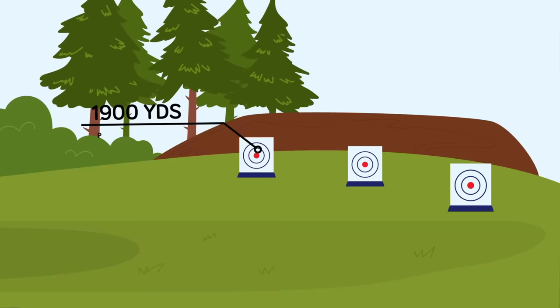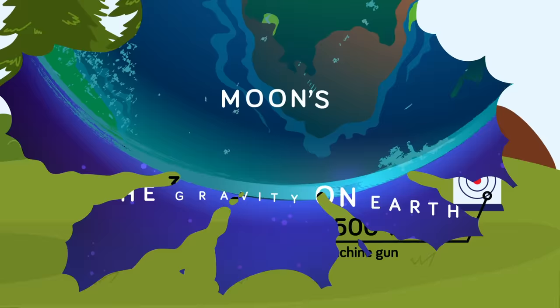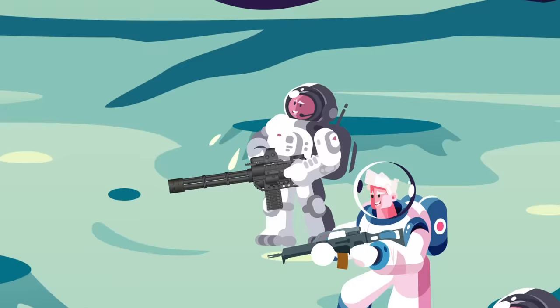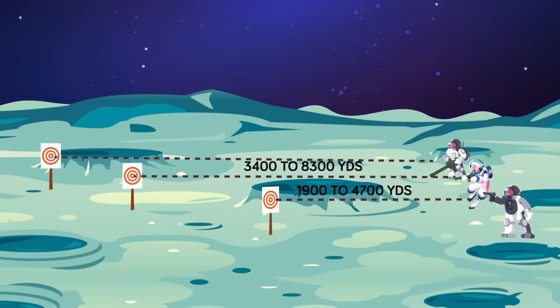Because the moon's gravity is one-sixth the strength of the gravity on earth, that means you could multiply these distances by a factor of almost 2.5 times greater. So that means for a 9mm pistol, a space cadet could fire a 9mm bullet almost 4,700 yards, snipe at an enemy with his rifle at almost 8,300 yards, and suppress their positions with machine gun fire at 11,000 yards.